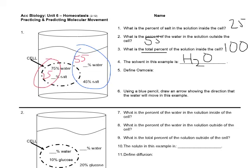Using a blue pencil, draw an arrow showing the direction that water will move in this example, and water will move from inside to outside, because it's going to move from 75 towards 55.